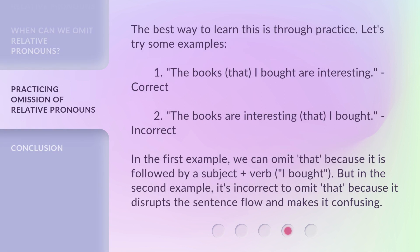The best way to learn this is through practice. Let's try some examples. First: 'The books that I bought are interesting.' — Correct. Second: 'The books are interesting, that I bought.' — Incorrect. In the first example, we can omit 'that' because it is followed by a subject plus verb — 'I bought.' But in the second example, it's incorrect to omit 'that' because it disrupts the sentence flow and makes it confusing.